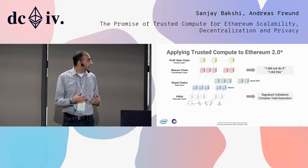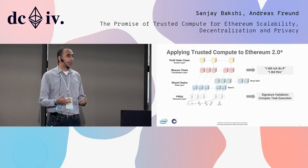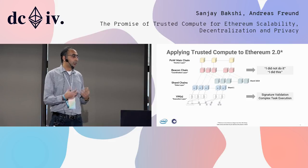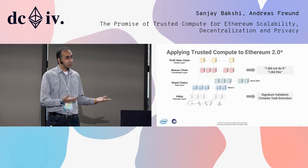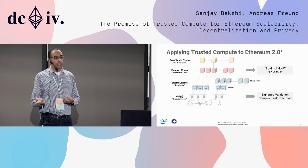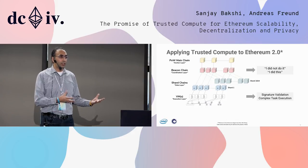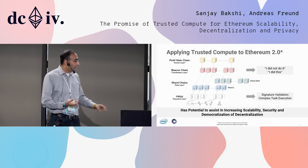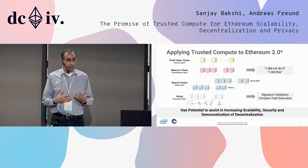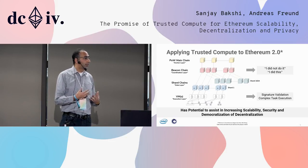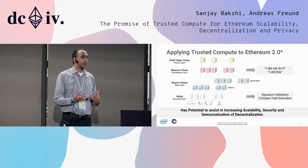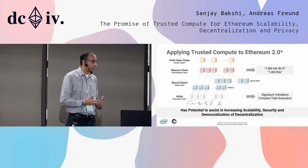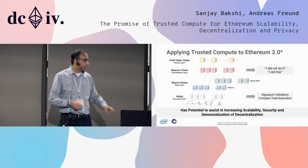At the execution layer, signature validations are a common task and they take a lot of time — you can offload that. Complex tasks that require a lot of gas can be offloaded to a plasma chain or side chain built around this. At the beacon layer, it reduces the friction and fear of getting slashed without recourse, which helps more people participate and hopefully increases the democratization of decentralization, while also helping with scalability and security.